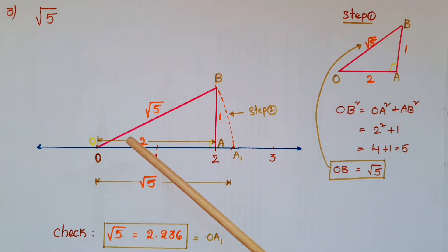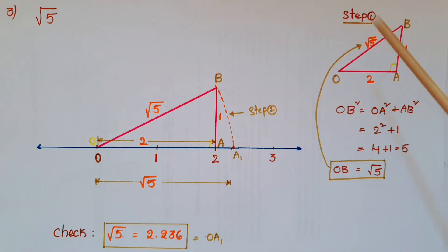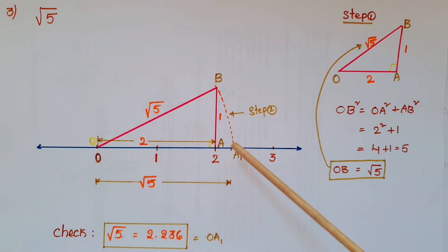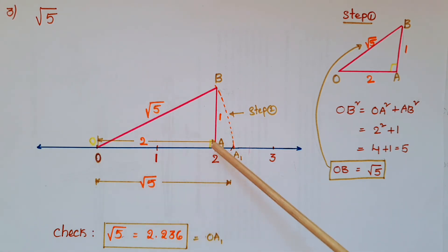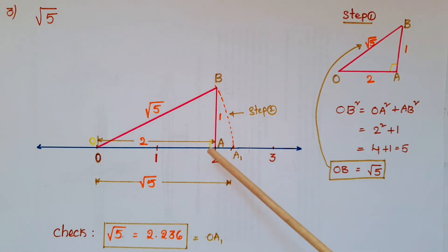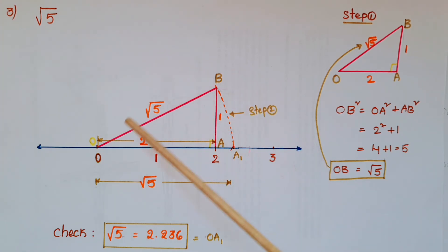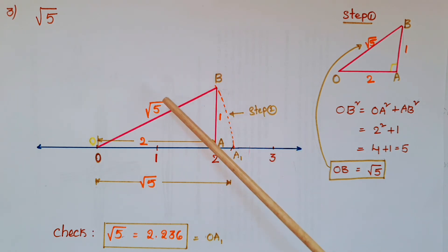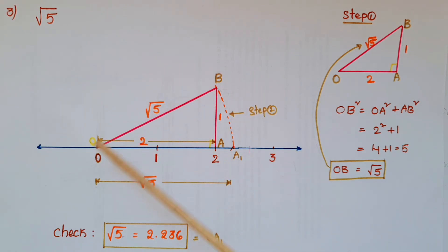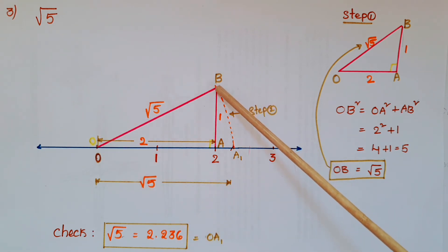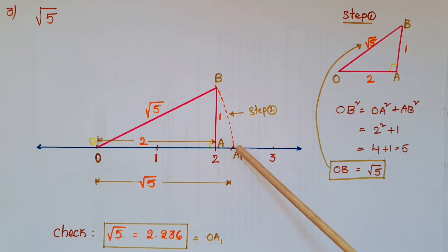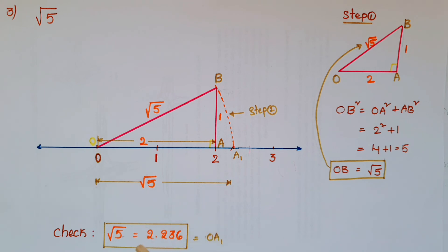On the number line, place O at 0 and A at 2, so OA is 2 units. Draw a perpendicular at A with 1 unit — that is AB. Join O and B to get root 5. Using a compass with center O and radius OB, draw an arc touching the number line at A1. So OA1 equals root 5, which we can verify with a scale as approximately 2.236.